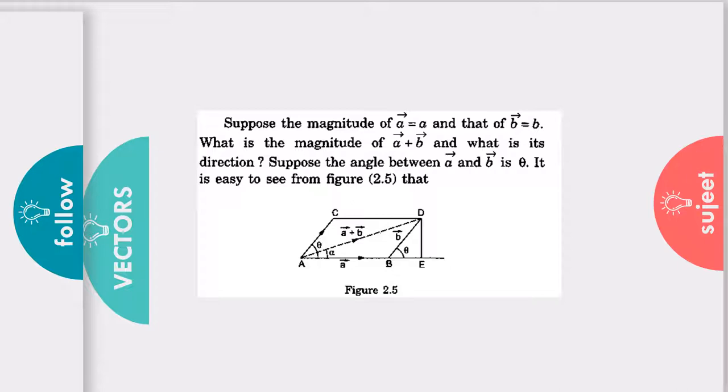Then how can we get it? Suppose the angle between vector a and vector b is theta. So if we know theta, then we can get the angle of the resultant, and the resultant angle is nothing but alpha.